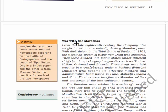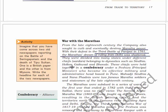Now, war with the Marathas. From the late 18th century, the company also sought to curb and eventually destroy Maratha power. With their defeat in the third battle of Panipat in 1761, the Marathas' dream of ruling from Delhi was shattered and they were divided into many states under different chiefs belonging to dynasties such as Sindhia, Holkar, Gaikwad, and Bhonsle. These chiefs were held together in a confederacy under a Peshwa - the principal minister who became the effective military and administrative head based in Pune.